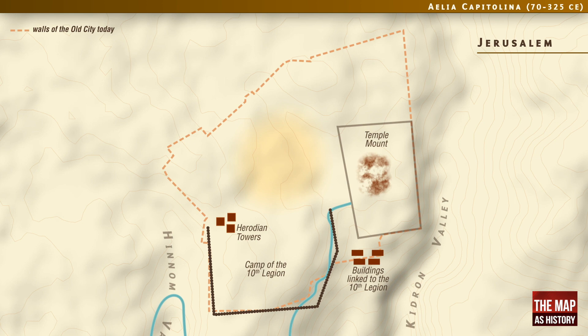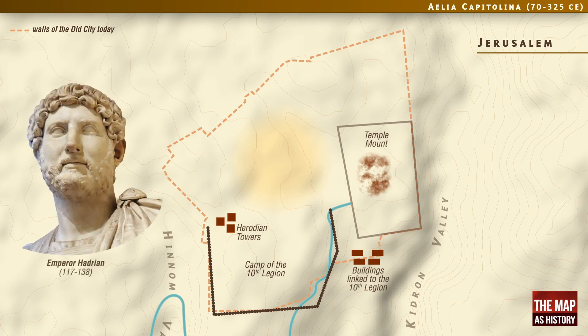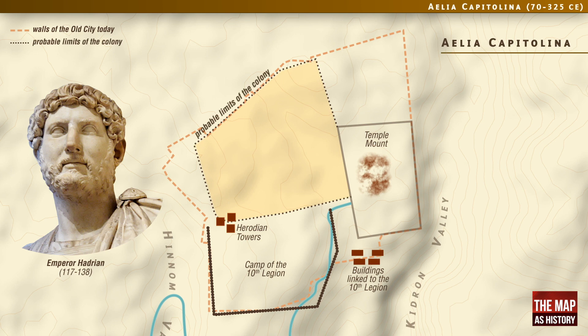However, numerous tiles and bricks stamped with the legion's emblems attest to its long-time presence at this site. In 129 CE, Emperor Hadrian decided to rebuild Jerusalem and therein establish a Roman colony named Aelia Capitolina. This decision led to the last major revolt by the Jews against Rome, also known as the Bar-Kokhba Revolt, which took place between 132 and 135.